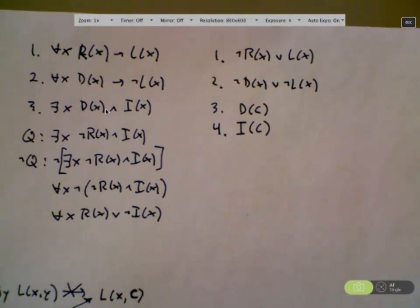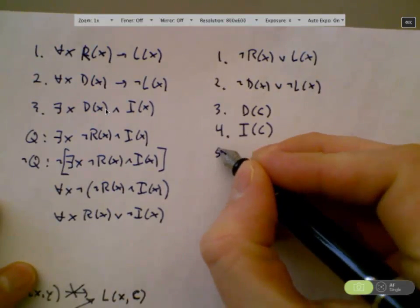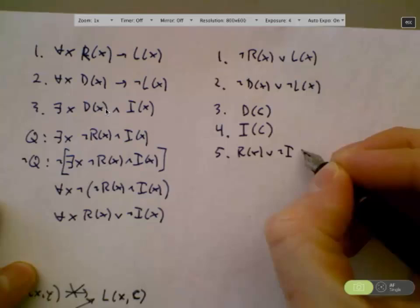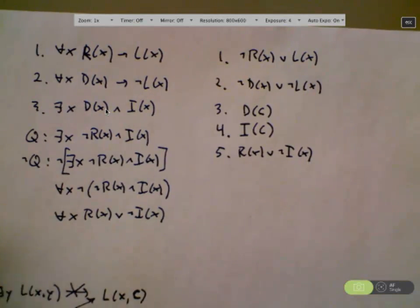So now we've got our query, which is already in clausual form. I can't believe it. R of x or not I of x. All right, brilliant.